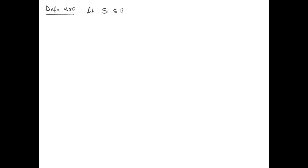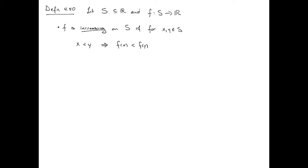Let's begin with a definition. Suppose that we've got S as a subset of the real numbers, and some real-valued function on S. We say that F is going to be increasing if you take two values X and Y in S, and you know that X is less than Y — that's going to imply that F of X is less than F of Y.